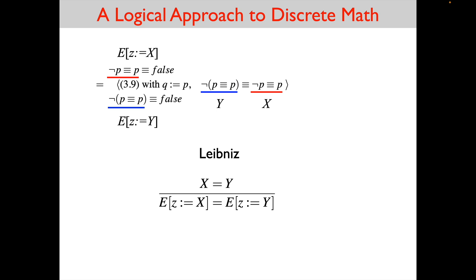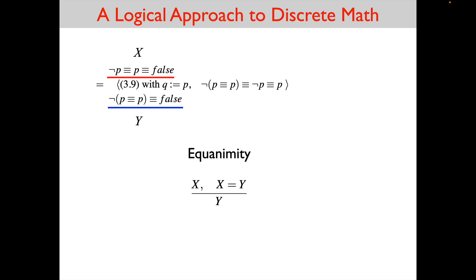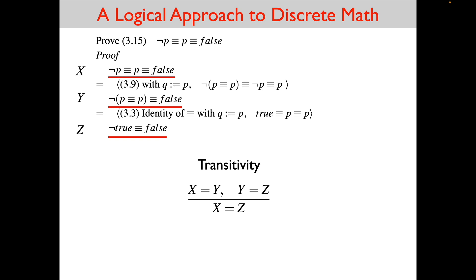Both substitution and Leibniz are explicit — we can identify exactly where we use them in each step of the proof. Equanimity and transitivity, on the other hand, are implicit. Equanimity says: if x is true in all states, and x equals y, then y is true in all states. In this example, x is the first line of our proof and y is the second line, with a hint in between. If the hint shows us that x equals y, then y is also true in all states — that is the implicit use of equanimity.